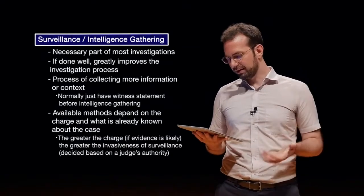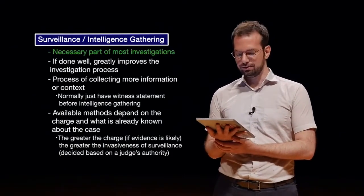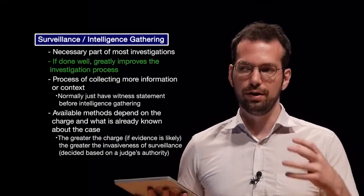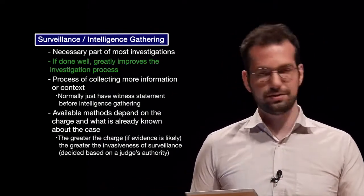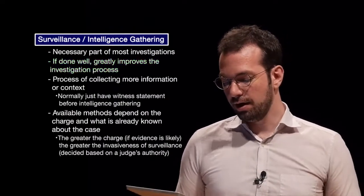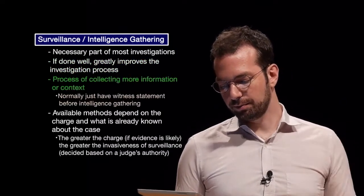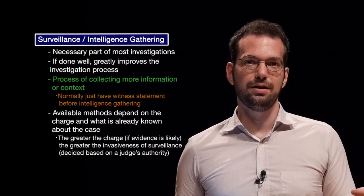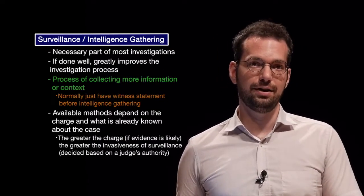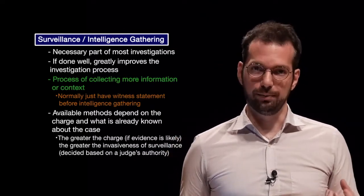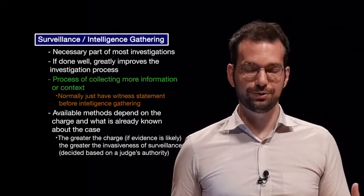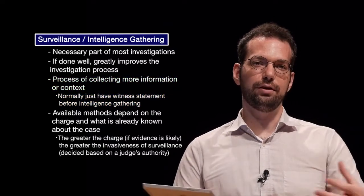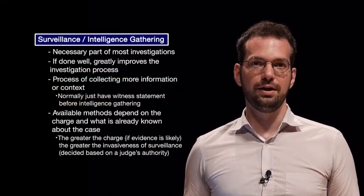Surveillance and intelligence gathering is a necessary part of most investigations. If it's done well, it greatly improves the investigation process because we have a lot more context — we know why things have been done, we know different people and places that may be involved as witnesses or suspects. Normally we just have witness statements before intelligence gathering. Most cases, at least for law enforcement, start when a victim or witness comes in and reports the case. So we've interviewed the witness or victim and they've told us a story. That story may be completely true or only partially true — we have to do the investigation to investigate that story. In the intelligence gathering phase, we find out more information about all the people or organizations that may be involved and find the context.